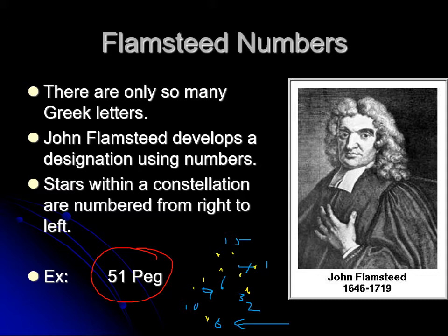An example is the star 51 Pegasi — you use the same three-letter abbreviation or the Latin genitive case, so Pegasus becomes Pegasi (P-E-G-A-S-I). The advantage of this system is you never run out of numbers. The disadvantage is that with a telescope you can see even more stars that weren't labeled, so another naming method was still needed beyond what Flamsteed had.